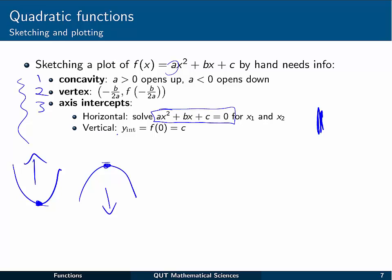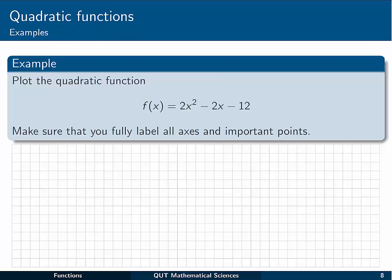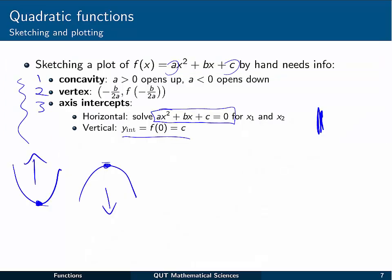And we also need to find the vertical intercept, the y value, at which the function crosses the y axis. And that's just equal to c, the number right on the end. Okay, so that's what we need to sketch our quadratic functions. Let's have a look at an example. And you can pause the video now, and try to do that one yourself. Just refer back to the previous slide, if you like, having a look at the concavity, the vertex, and the axis intercepts.